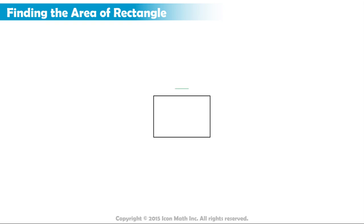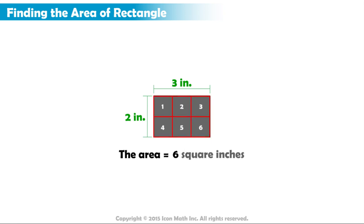For example, to find the area of a rectangle that is 3 inches long and 2 inches wide, we can cover the space inside the rectangle by using 1 inch unit squares. In other words, using squares whose side length is 1 inch. As you can see, we can cover the entire space within the rectangle with 6 of these unit squares. So we say that the area of the rectangle is 6 square inches.